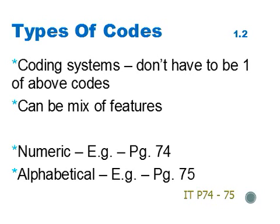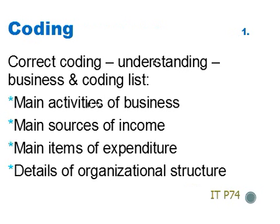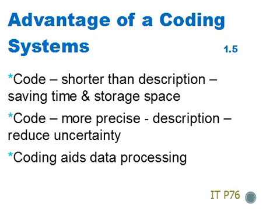For examples of numeric codes, see page 74 of your interactive text study guide, and for alphabetical codes, see page 75. In order to have correct coding, there needs to be a good understanding of the business and the coding list, including the main activities of the business, the main sources of income, the main items of expenditure, and the details of the organizational structure. The advantages of a coding system are: a code is shorter than a description, which saves time and storage space; a code is more precise than a description, which reduces uncertainty; and encoding aids data processing.